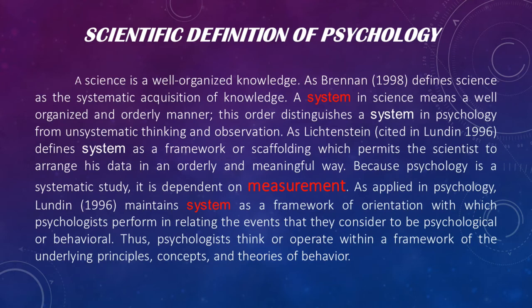How do we define science? A science is a well-organized body of knowledge. As Brennan (1998) defined it, science is the systematic acquisition of knowledge — not just by systematic thinking and observation. Lichtenstein defines system as a framework or scaffolding which permits the scientist to arrange data in an orderly and meaningful way. Because psychology is a systematic study, it is dependent on measurement. Therefore, psychology is a systematic study of human behavior and mental processes using measurement, with a framework for identifying what is behavioral or psychological.